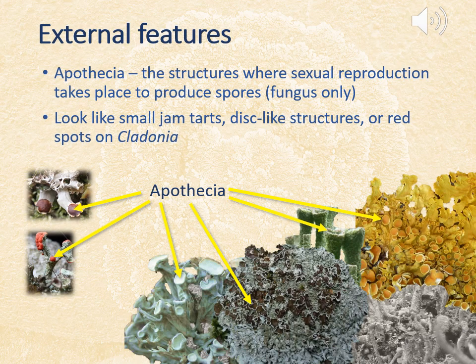Very characteristic features of many lichen species are apothecia, which commonly look like tiny jam tarts — disc-like structures or spots. The apothecia are where sexual reproduction takes place to produce fungal spores. When the spores are released, they need to find the photobiont partner in order to form a new lichen colony. Not all lichens produce apothecia, and spores can be produced by other structures as well.